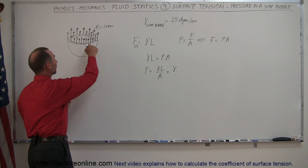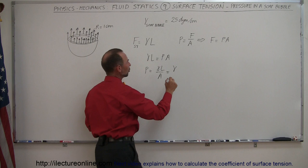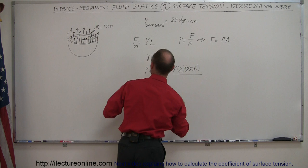Now, γ times L. Remember, L is twice the circumference of the cross-sectional area of the soap bubble. So it would be 2 times 2π times the radius divided by the cross-sectional area. And again, it's the effective area.